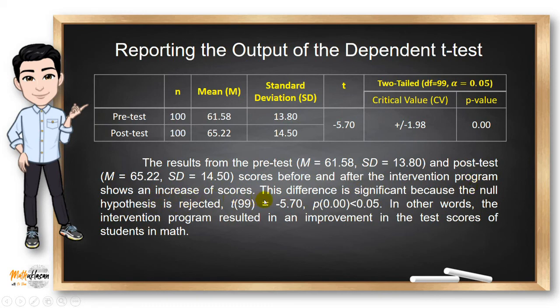From this table, we can see that the results from the pre-test and post-test scores before and after the intervention program shows an increase of scores because from the average of 61.58 in the pre-test, we got an average of 65.22 in the post-test. And this difference between these two means is significant because the p-value is less than 0.05. In other words, the intervention program resulted in an improvement in the test scores of students in math.